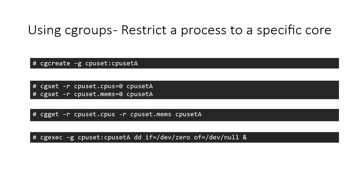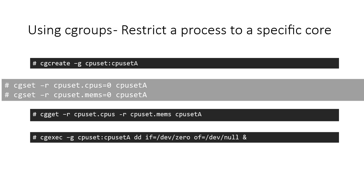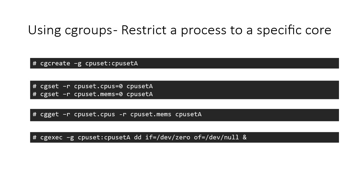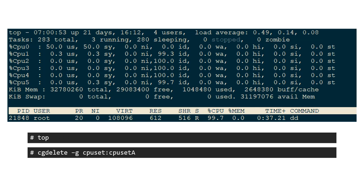Now let's see how to run a process and restrict it to core 0 of the processor and NUMA node 0. For example, the process we want to run may just copy zeros to the null device. To achieve it, let's create a new cgroup under the CPUset hierarchy with the name CPUset_A, assign CPU core 0 and NUMA node 0 to it, create the required process using the dd command, and execute it by placing it in the cgroup CPUset_A. Using the top command, we can verify if the process is using only CPU 0. You can see that only CPU 0 is allocated to the process we created.